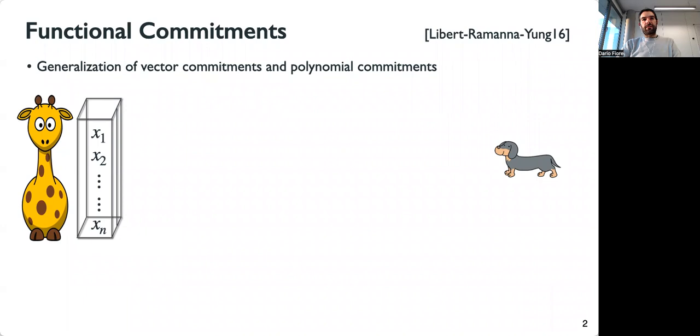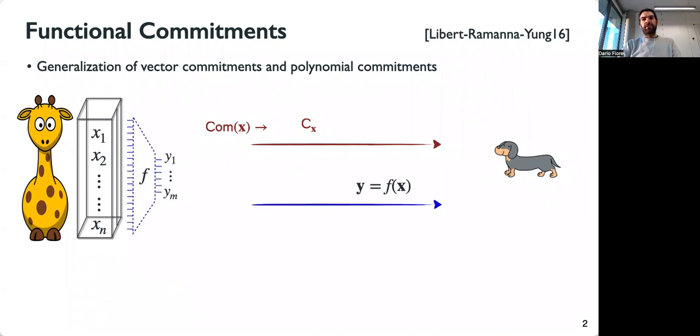The idea is that the sender wants to commit to this vector X, give this commitment to the receiver, and then at later points in time wants to compute some function on the committed data.